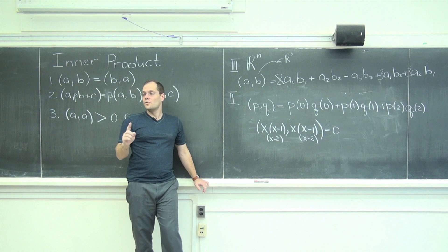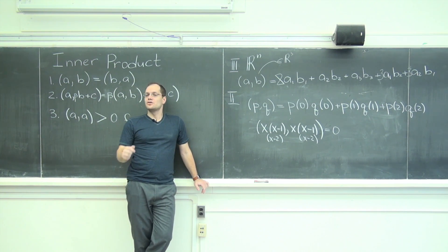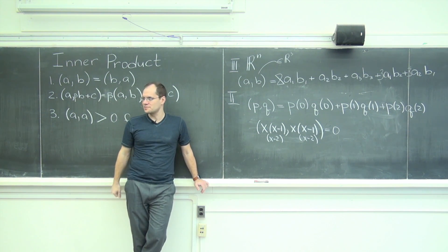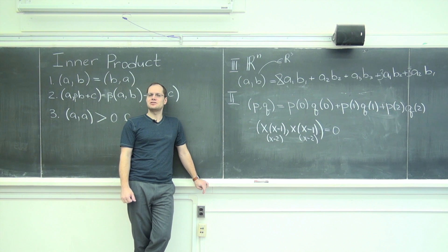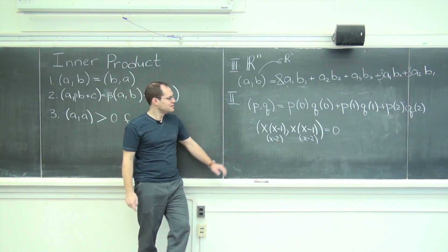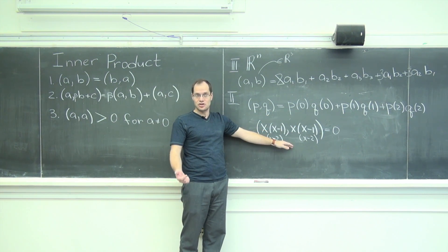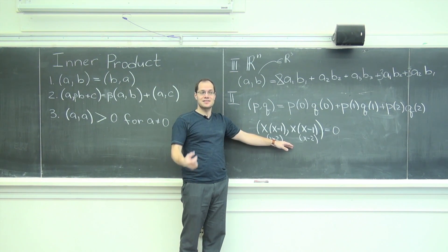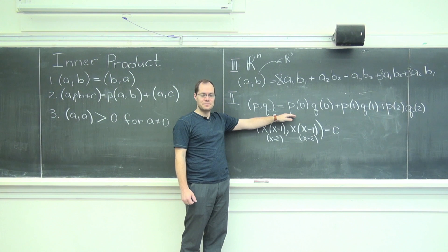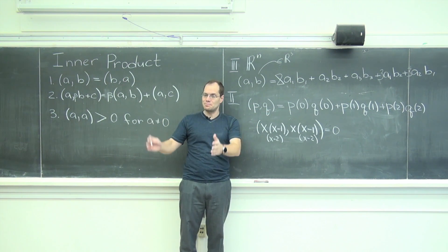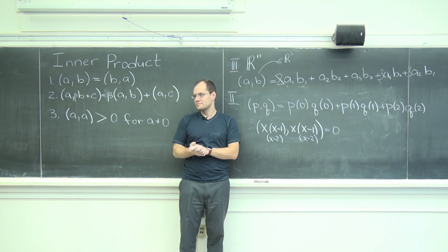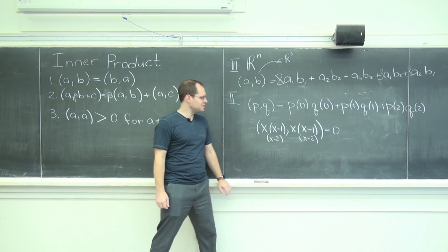Now suppose we limit ourselves to the space of quadratic polynomials. Isn't it interesting that on the space of quadratic polynomials, this IS an inner product? Because you can't have a quadratic polynomial go through three zeros, so you can't do this cubic trick. That's a subtlety: one and the same definition can be a perfectly legitimate inner product in a particular space and fail positive definiteness on a wider space.